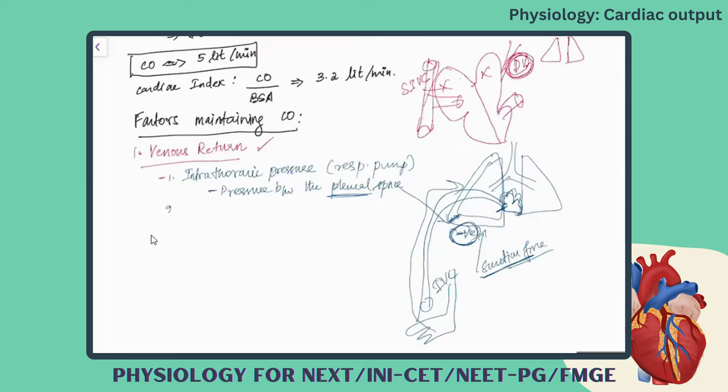The second factor maintaining venous return is venomotor tone. As the name suggests, it is the tension which is maintained in the blood vessels. This tension exerts a force — the constriction of the vessel wall — which helps the venous return to be maintained in its condition. The third one is blood volume.